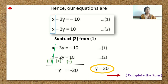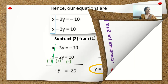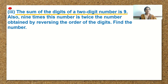I am leaving this sum here for you to complete. Moving to the next sum: the sum of the digits of a two-digit number is 9. Also, 9 times this number is twice the number obtained by reversing the order of the digits. Find the number.